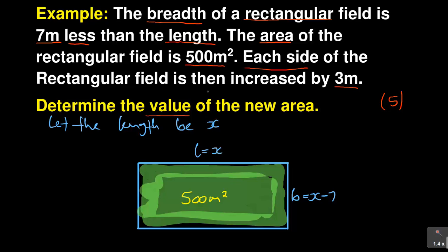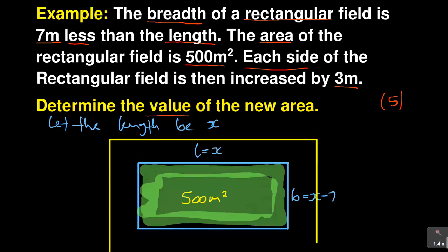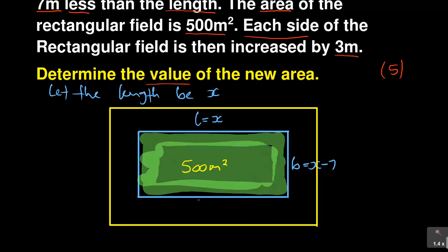Each side of the rectangular field is then increased by three meters. So you have a new rectangular field. Let me draw this new one. They are saying each side is increased. So we have an increase of three meters on each side. Which means we need to find the new length and the new breadth.